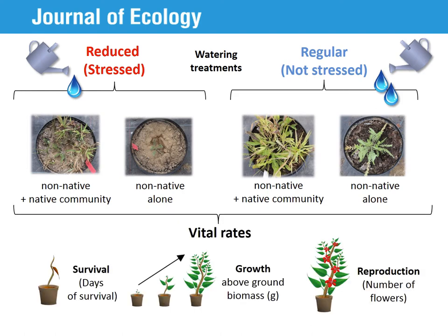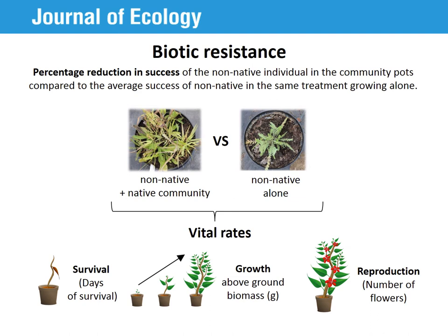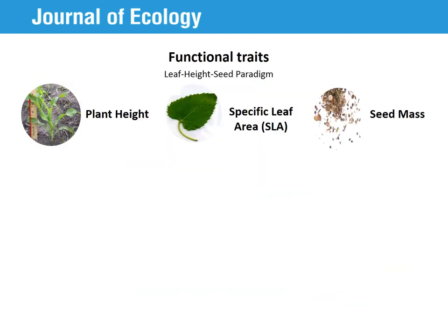We quantified three vital rates or performance measures of the ornamental individual: survival, as the days of survival; growth, as the above-ground dried biomass; and reproduction, as the number of flowers. Resistance to a potential invader is defined as the native community's competitive effect on the performance of the invader species. We quantified the strength of biotic resistance to each ornamental across vital rates. We calculated the percentage reduction in success of the non-native individual in the community pots compared to the average success of the individuals of the same species in the same treatment growing alone.